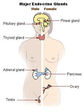The human endocrine system consists of several systems that operate via feedback loops. Several important feedback systems are mediated via the hypothalamus and pituitary.